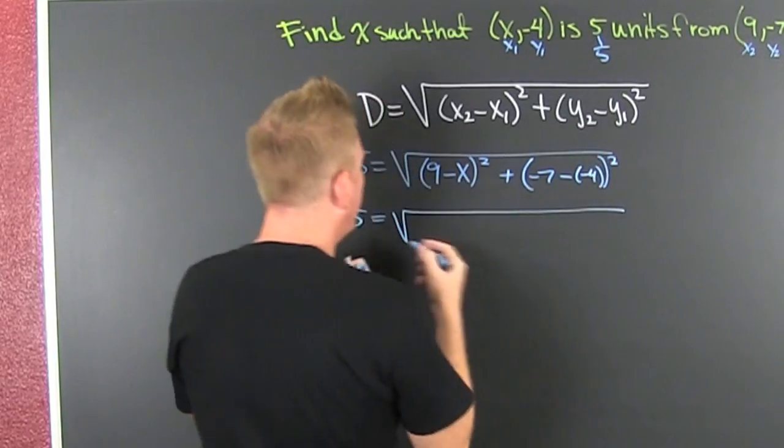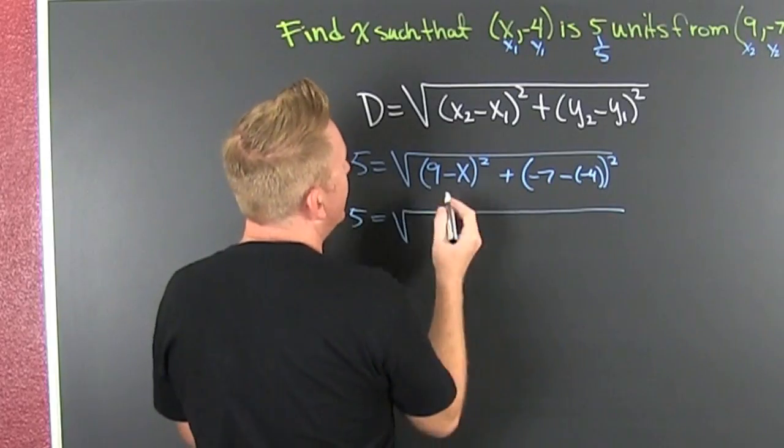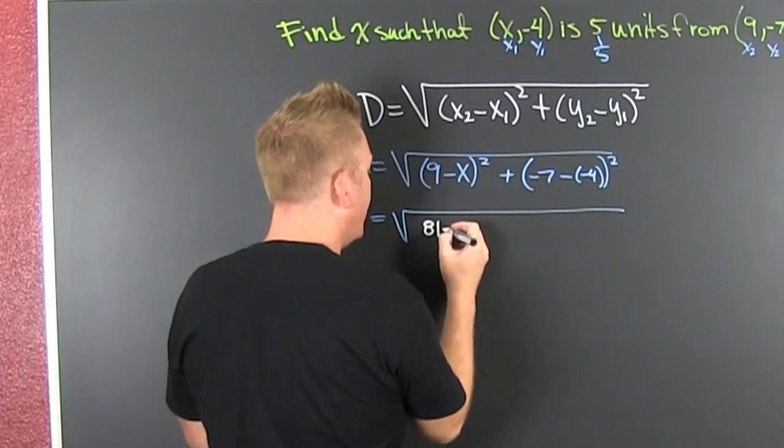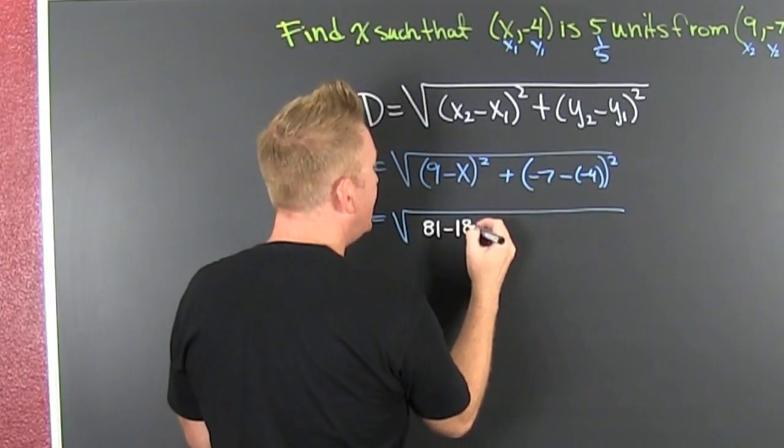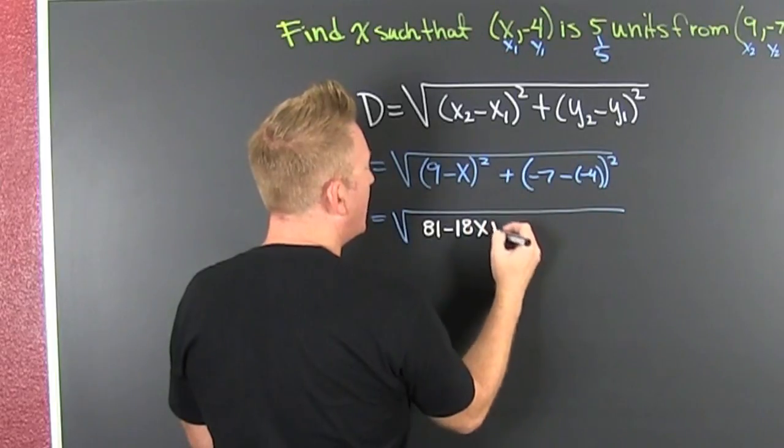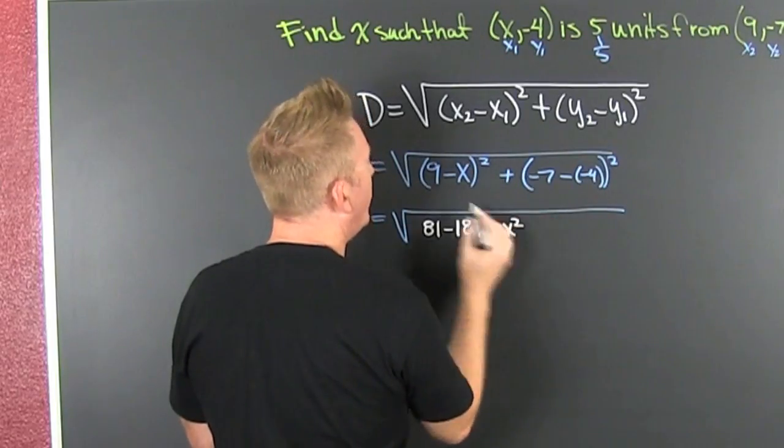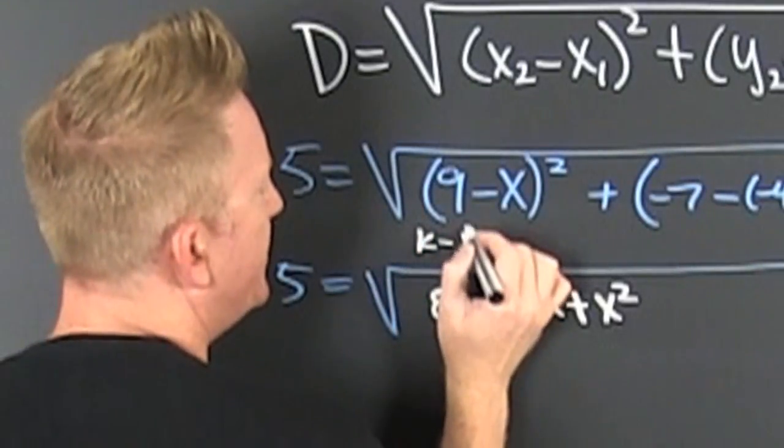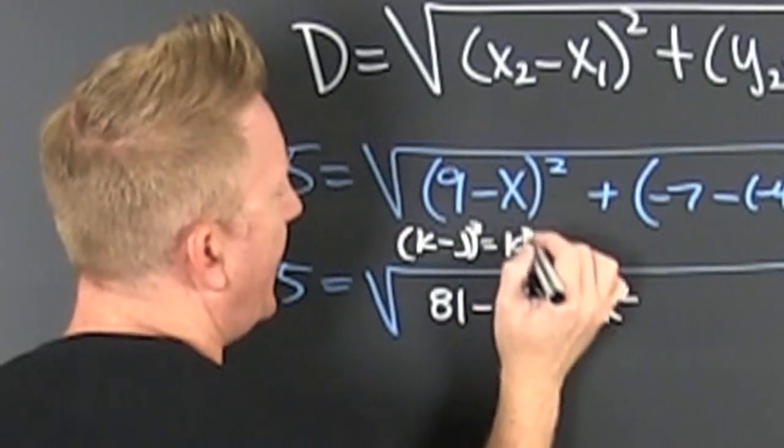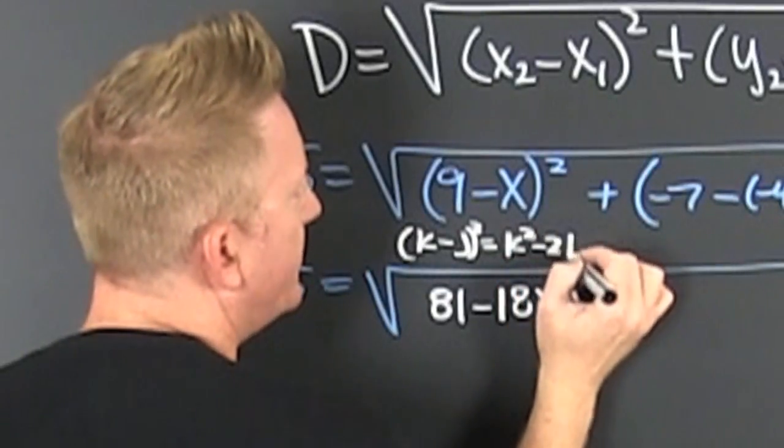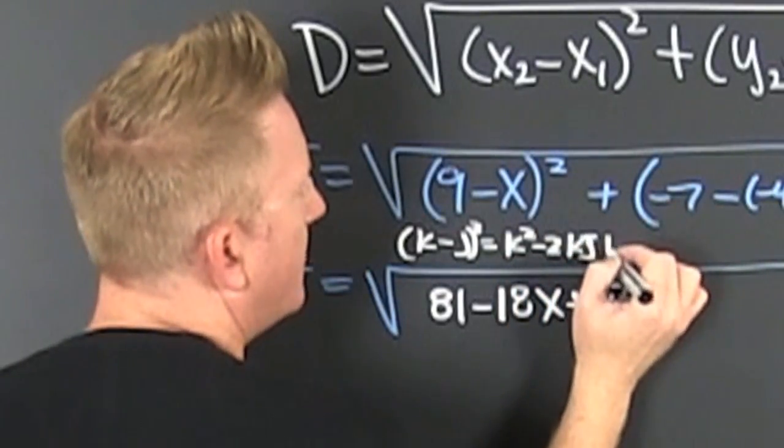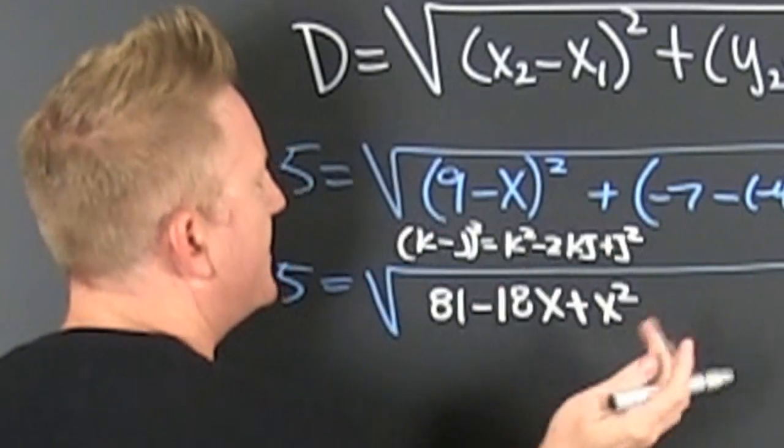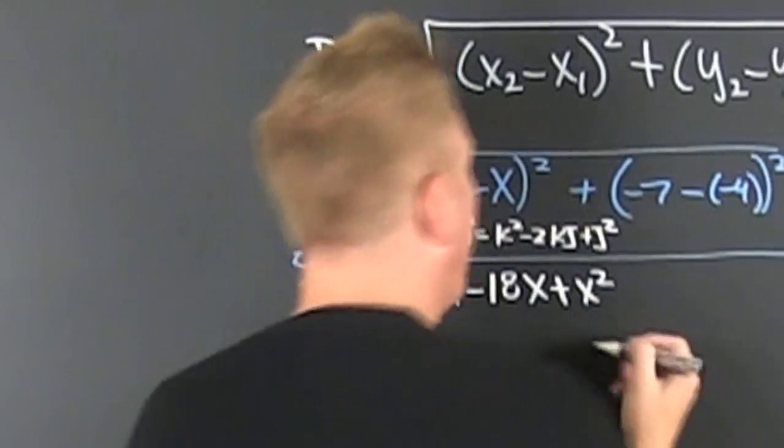So then, this part right here, that's 81. 81, this one times that one, double it, minus 18X and then plus X squared. Why? Because if you had, let's say, K minus J and that was squared, that would be K squared minus 2KJ and then plus J squared. That's how that multiplies out because it's a perfect square.